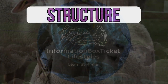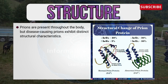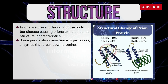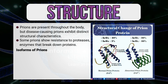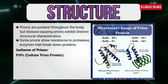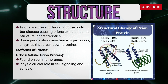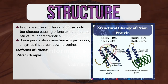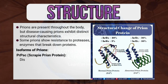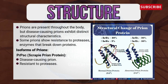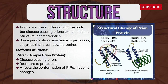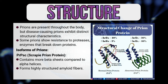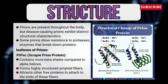Now let's learn the structure of prions. Prions are present throughout the body, but disease-causing prions exhibit distinct structural characteristics. Some prions show resistance to proteases — enzymes that break down proteins. There are two isoforms of prions: PrP-c (cellular prion protein), found on cell membranes and playing a crucial role in cell signaling and adhesion, with ongoing research to uncover additional functions; and PrP-sc (disease-causing prion), which is resistant to proteases, affects the conformation of PrP-c inducing changes, contains more beta sheets compared to alpha helices, forms highly structured amyloid fibers, and attracts other free proteins to attach to the ends of these fibers.